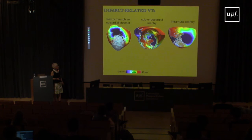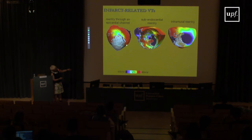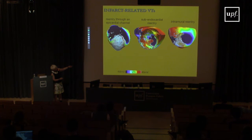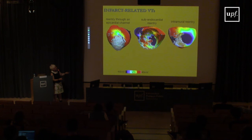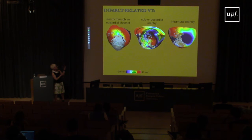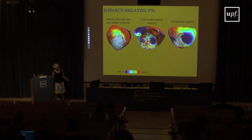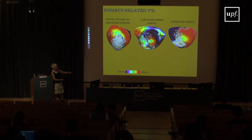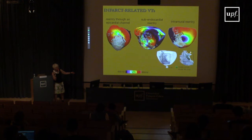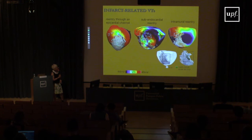In one heart there is a clear channel through which the electrical wave travels and sets up a re-entrant arrhythmia. In another the re-entry was subendocardial, staying mostly on the endocardial layer. In a third case the re-entry was intramural, going between epicardium and endocardium and traversing the full wall thickness. Across all these hearts we observed different types of arrhythmias depending on the scar morphology.